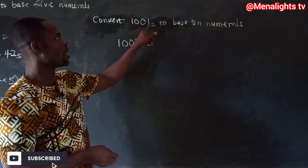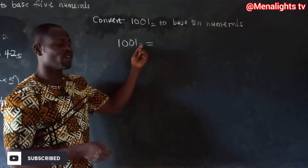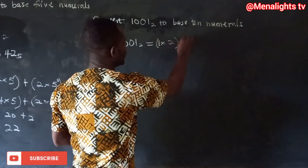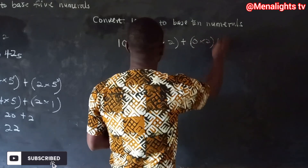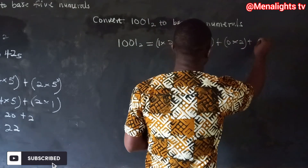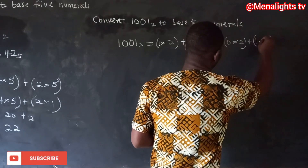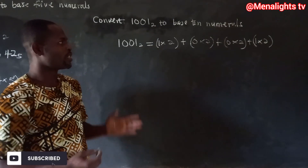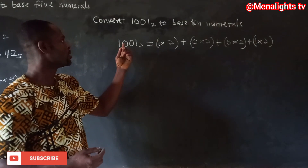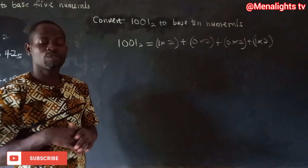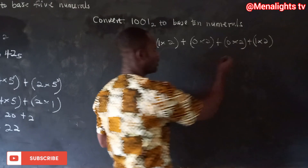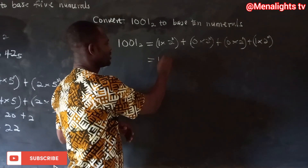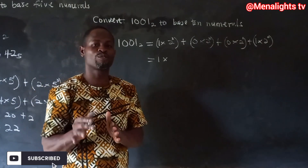Now let's convert 1001 base two to base 10. We multiply each digit by the base two, and exponent each position from right to left starting at zero — so positions are zero, one, two, three from right to left. We get: one times two to the three, zero times two squared, zero times two to the one, and one times two to the zero.